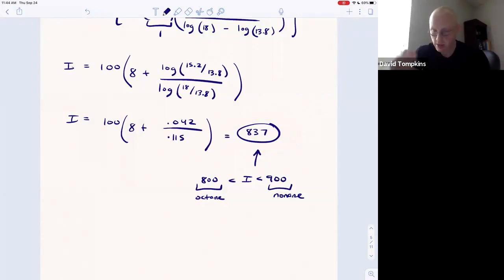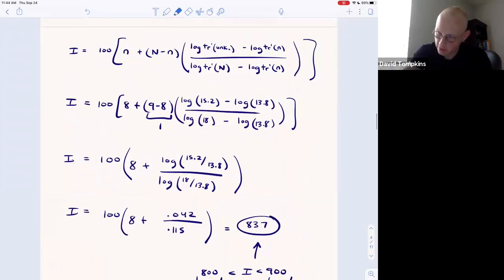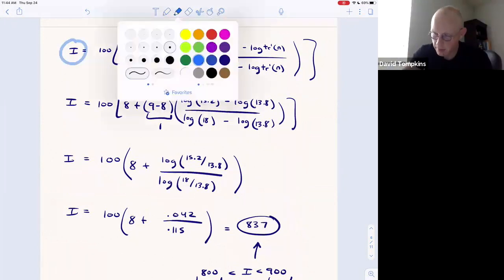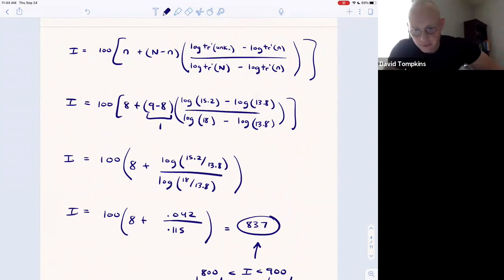You can also be asked to solve for one of the retention times in this formula simply by being given the Kovats index. That's another problem type you should be comfortable with completing. This formula just tells us about the relative retention indices of hydrocarbons as a function of their molecular weight. The higher molecular weight compounds have higher indices of retention and therefore come out of the GC or elute at later times.